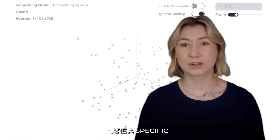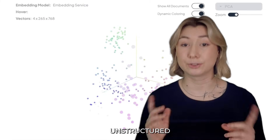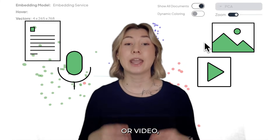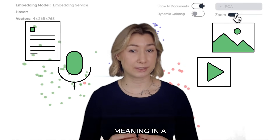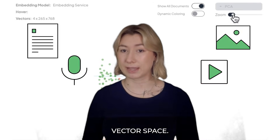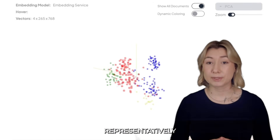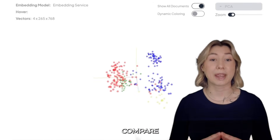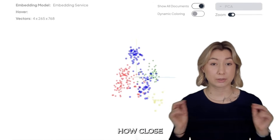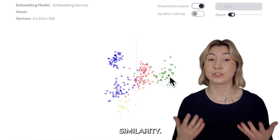Embedding models are a specific type of model that takes unstructured data like text, images, audio, or video, and encodes its relative meaning in a high-dimensional vector space. This means that we can representatively compare vectors to one another by seeing how close or far apart they are to judge similarity.